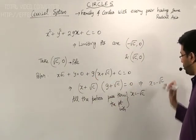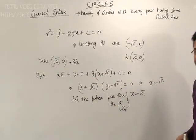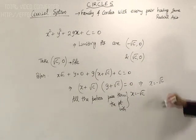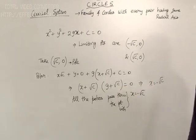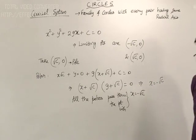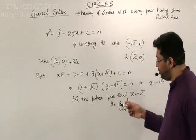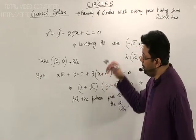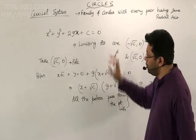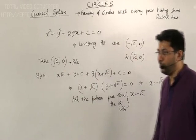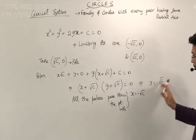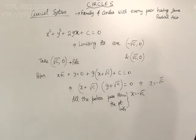The polar is nothing but x equal to minus root c, a line parallel to the y-axis, independent of the parameter g. So for any circle belonging to this system, if you take this limiting point as the pole, the polar will be x equal to minus root c.